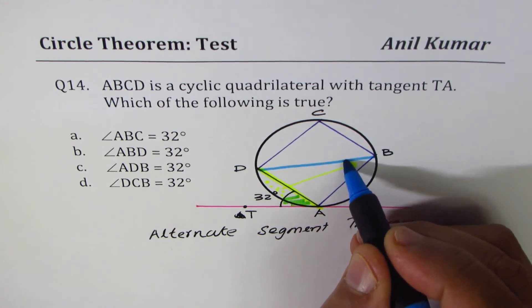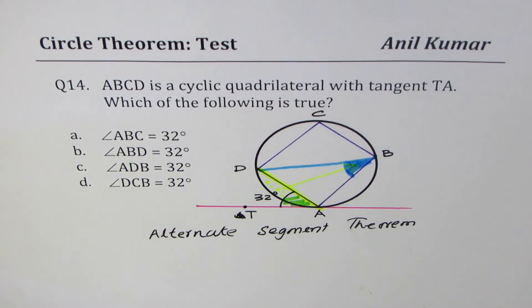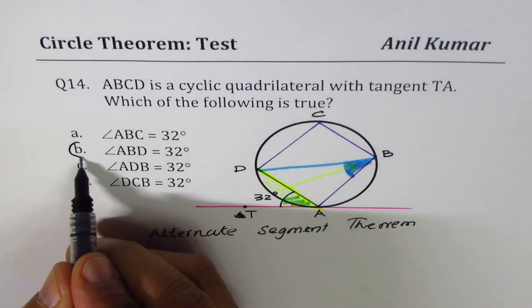The angle which we are talking about is this angle. So that should be your answer. ABD. ABD should be 32.